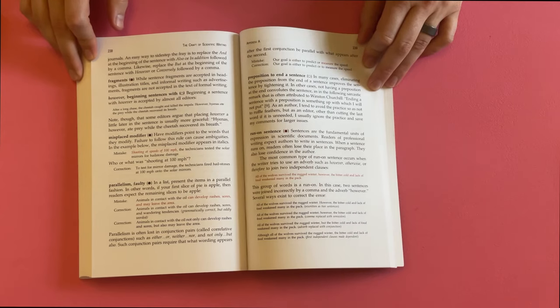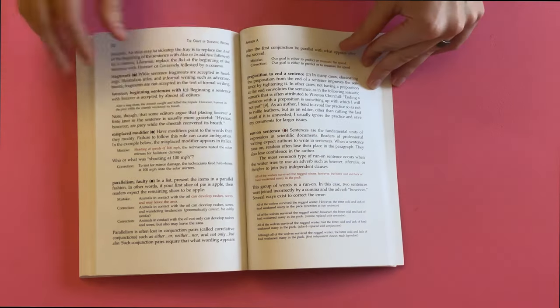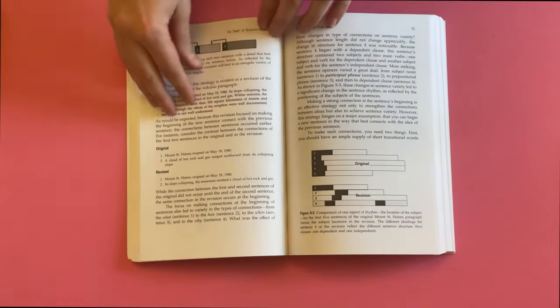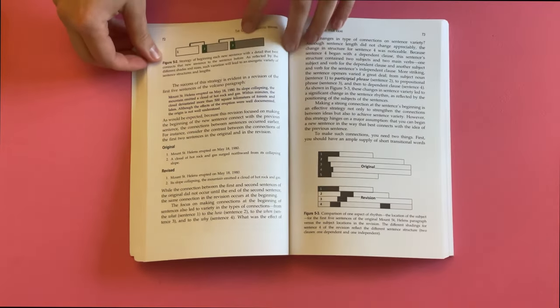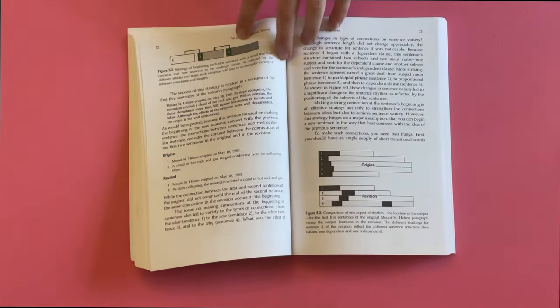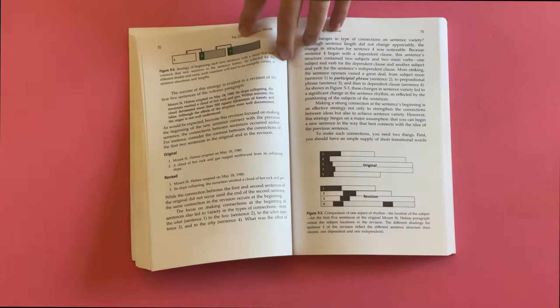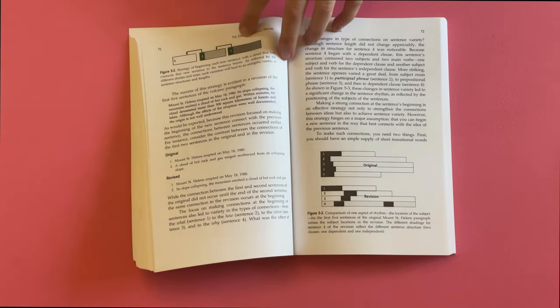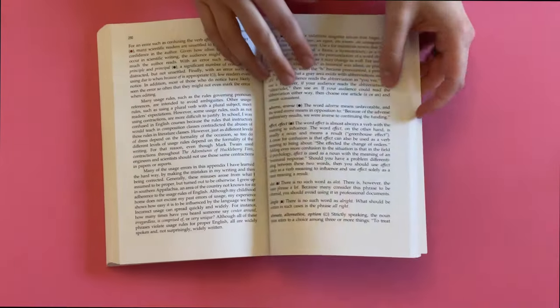What resonated with me the most were the sections on maintaining the energy of text and the careful selection of words, which are crucial for engaging the reader. The author's insights into sentence variety and paragraph structure have influenced my writing style, encouraging me to visualize sentence length variation as a means to avoid monotonous writing.